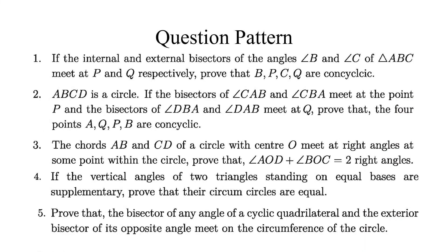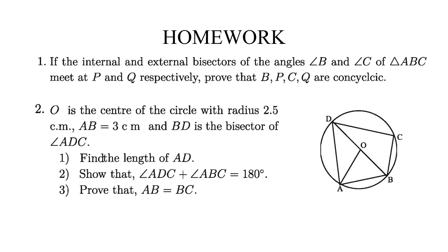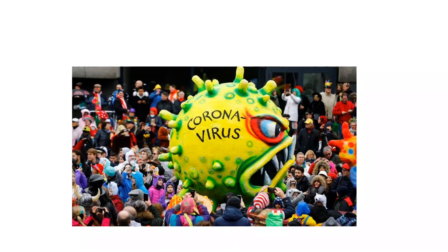In this chapter, the important questions are these five questions. You will see them in your textbook. Now, for homework: first question — if the internal and external bisectors of angles B and C of triangle ABC meet at P and Q respectively, prove that B, P, C, Q are concyclic. Also, there is a creative question for your homework, and remember this creative question is very important for your exam. Dear cadets, if you have any questions, you can ask me in the comment section. Be aware of coronavirus, stay home and remain safe.